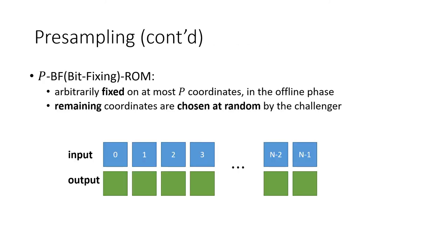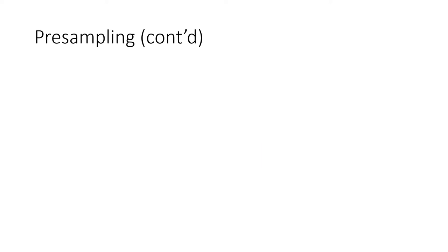We first define bit-fixing model. An oracle is arbitrarily fixed on at most p-coordinates, which is chosen by the attacker in the offline phase, and the remaining coordinates are chosen at random and independently of the fixed coordinates. This is also easy to define security in the bit-fixing model. In other words, an oracle is sampled as follows. First, the outputs are arbitrarily fixed on p-coordinates by the attacker, and then the remaining coordinates are sampled by the challenger.